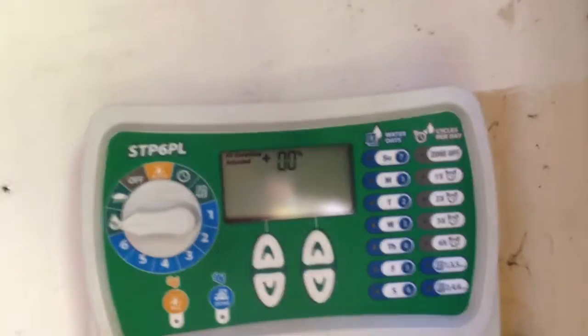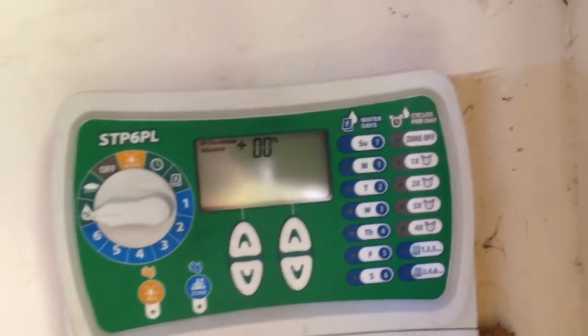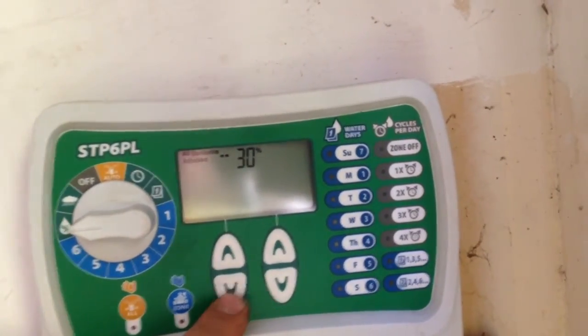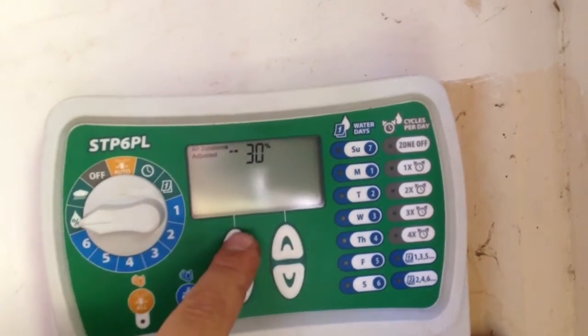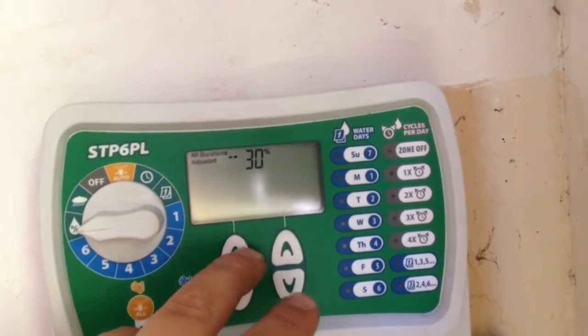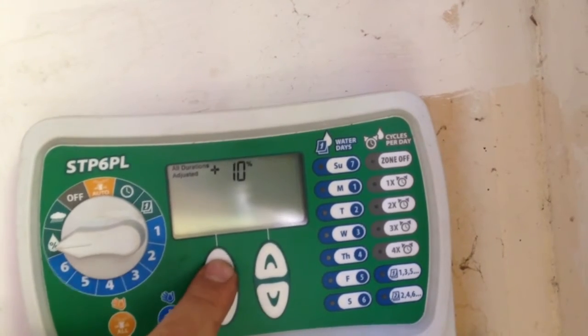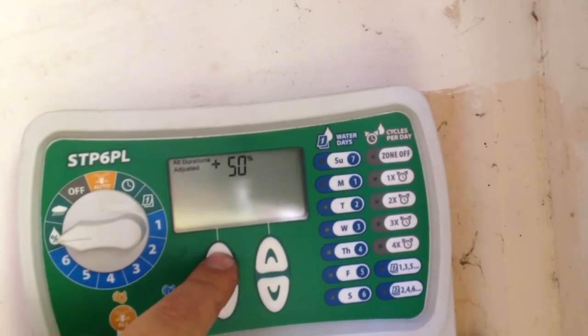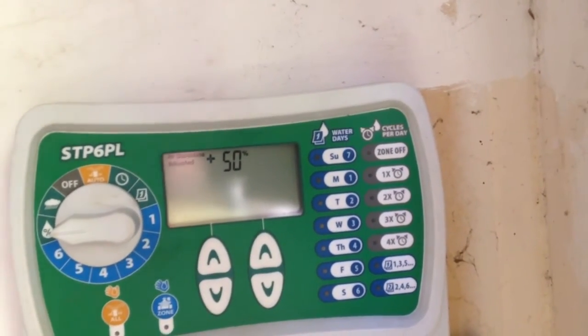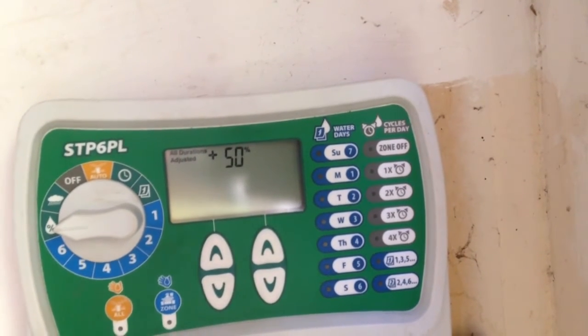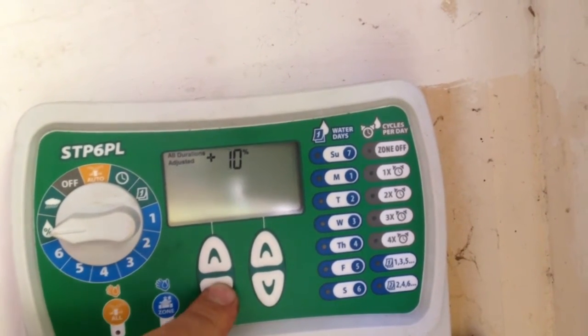Now, seasonal percentage. This is going to give you an adjustment, a plus-minus adjustment percentage. If I come down, it's going to give me minus 30%. In the springtime, you can start with a minus and then go up as it gets hotter. Right now, the 30-minute zones are going to run for 45 minutes at plus 50%.